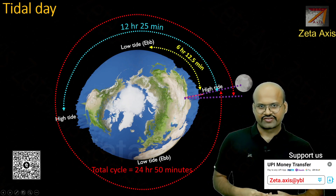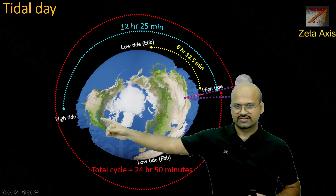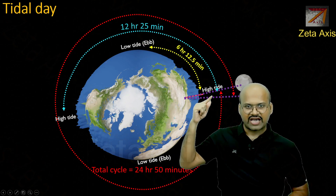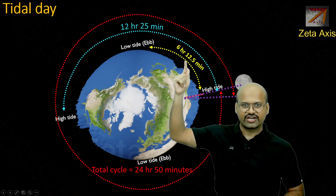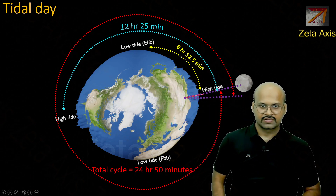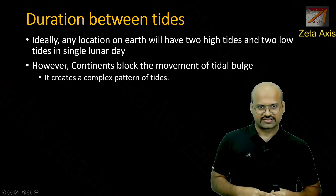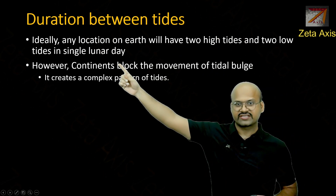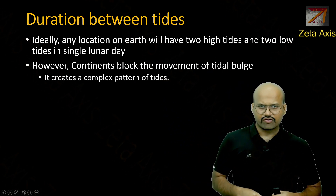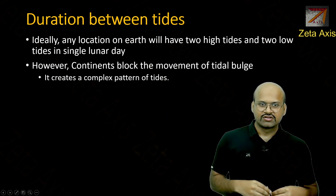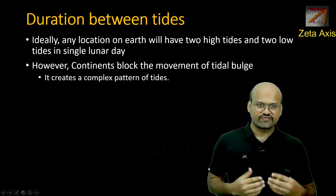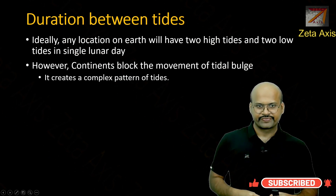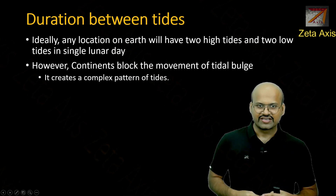Using this, we can understand the time difference between two high tides, which is around 12 hours and 25 minutes — exactly half of the tidal day — and the time gap between a high tide and a low tide is 6 hours and 12.5 minutes. Under ideal circumstances, if the earth were completely liquid, there would be two high tides and two low tides per lunar day. However, because continents change the flow of water, there is no uniformity in the number of tides across the globe.